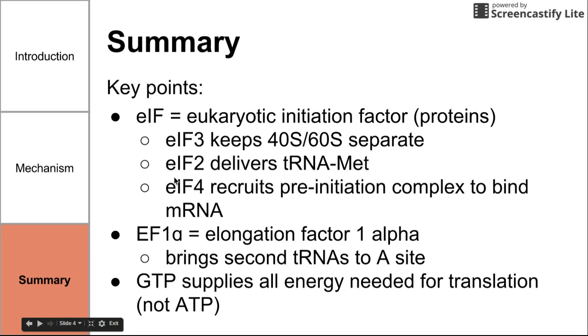Initiation factor 3 kept the two ribosomal subunits separate until binding was complete. Initiation factor 2 delivered the first amino acid bound to tRNA directly to the P-site.